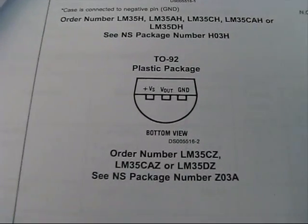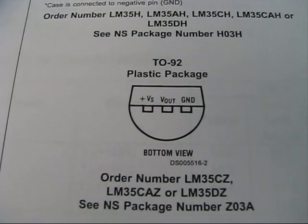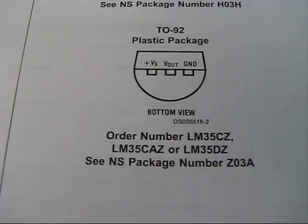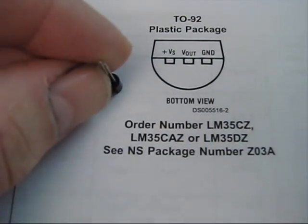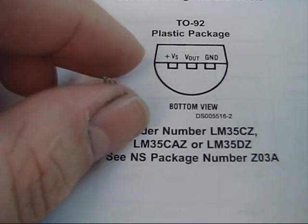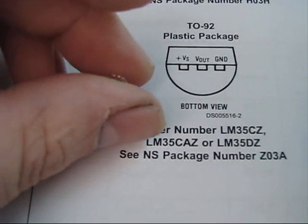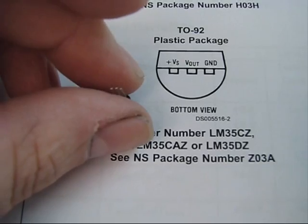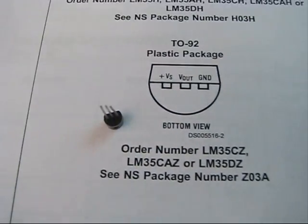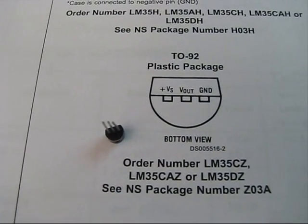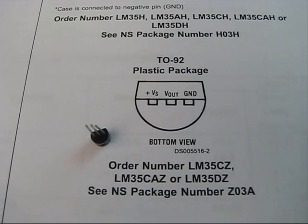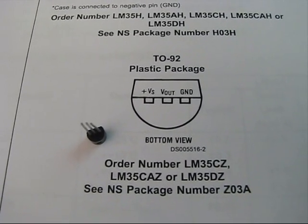Okay, page number two shows us how we're actually going to hook this up. So looking at the bottom of the device, actually that's backwards with the curve on the bottom, like so. The left pin is power in, the center pin is our voltage out, and our right pin is ground.